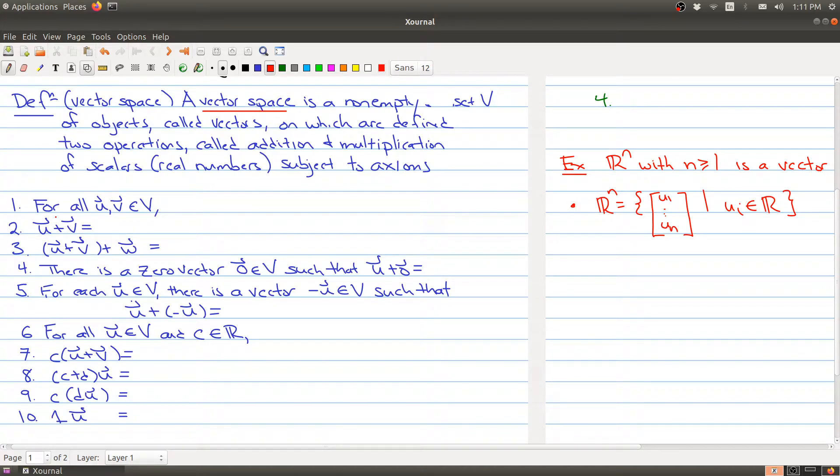So the first statement says that for all pairs U and V, when you add them together using your operation, you get another object inside of your set. The second condition tells me the order in which I add my vectors does not matter. So U plus V is equal to V plus U.